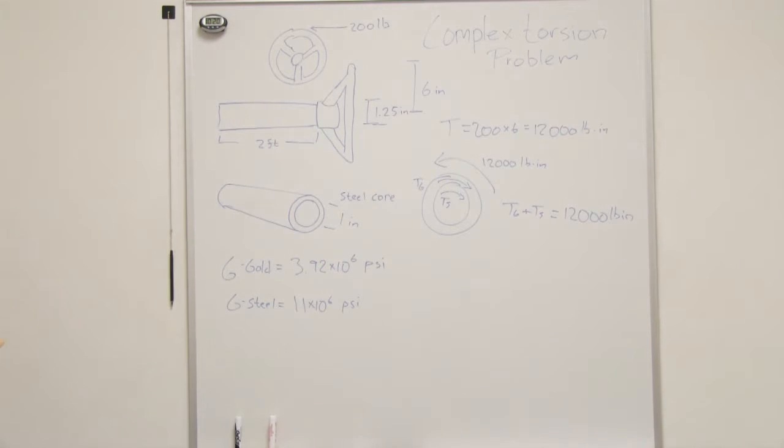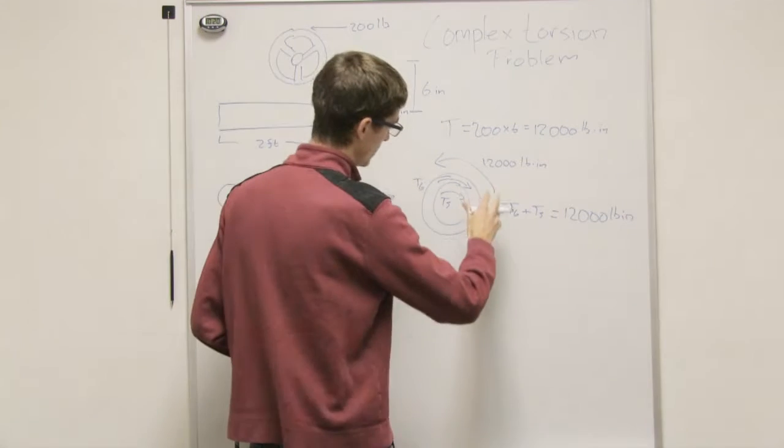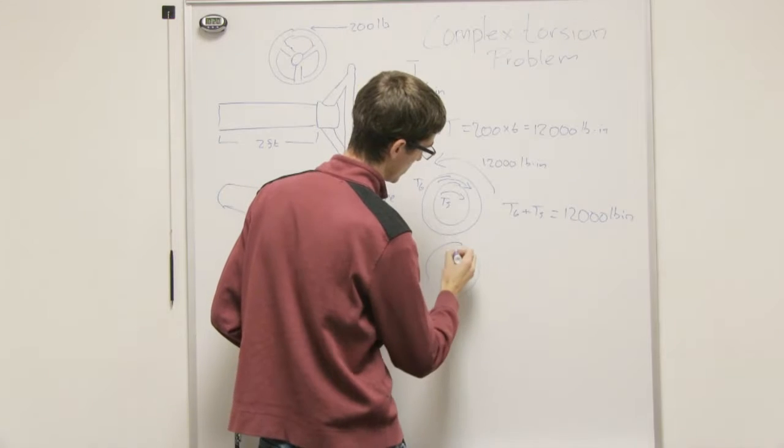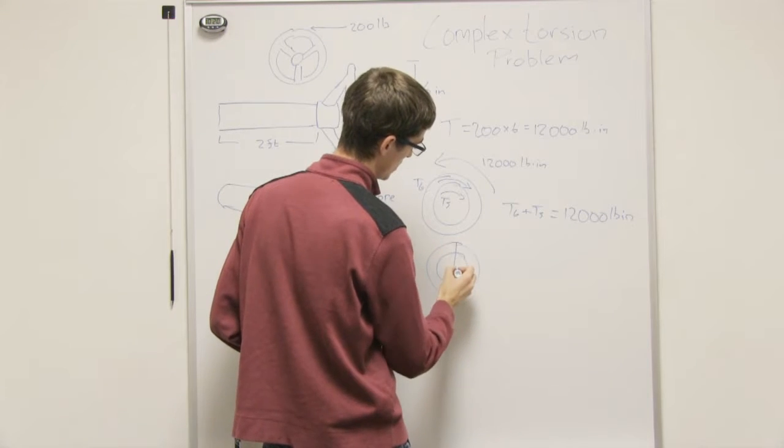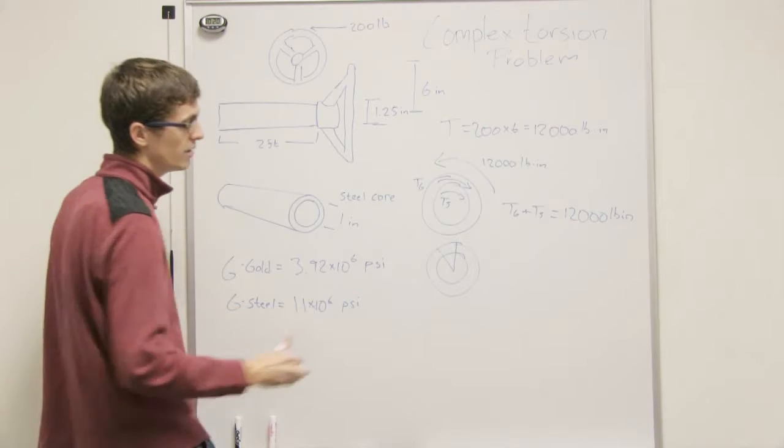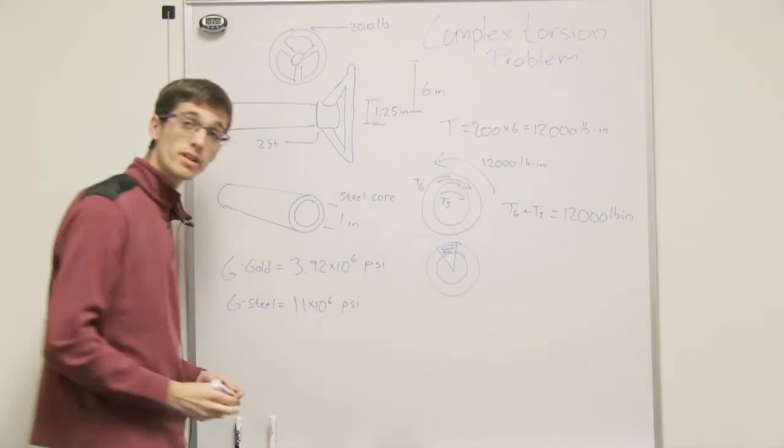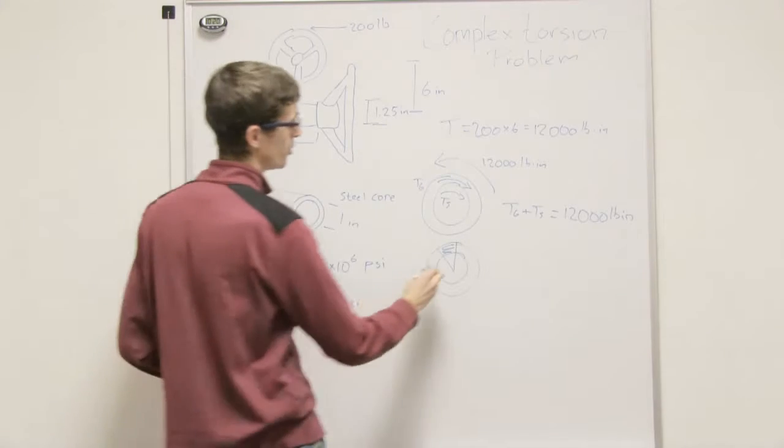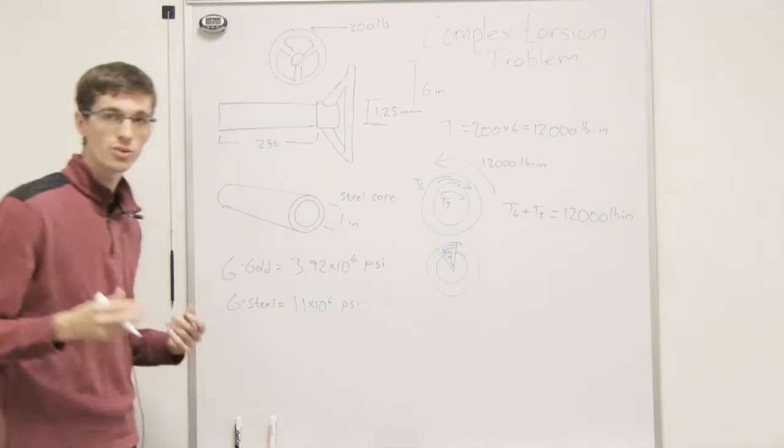We know that. Alright, so that's the first thing that we can deal with. The second thing is that we know that when we twist this, that there's going to be an angle of twist, that the angle of twist within the gold has to be equal to the angle of twist in the steel rod.